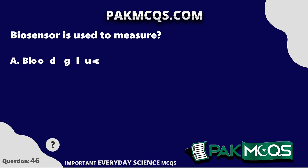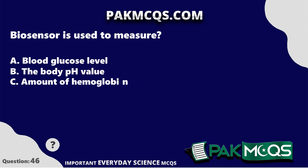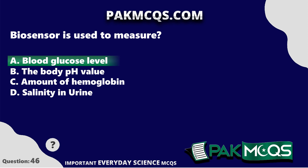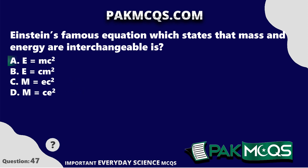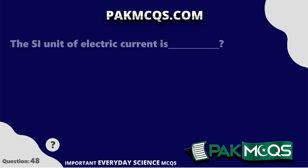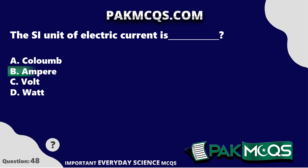A biosensor is used to measure blood glucose level. Einstein's famous equation which states that mass and energy are interchangeable is E equals mc squared. The SI unit of electric current is Ampere.